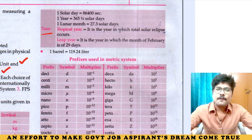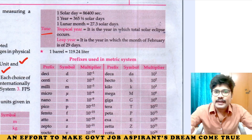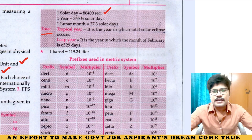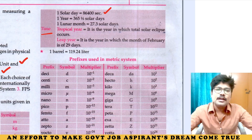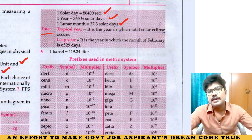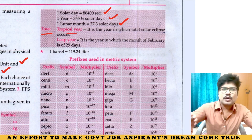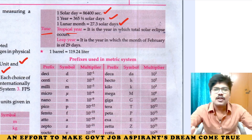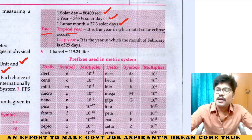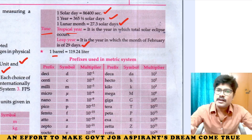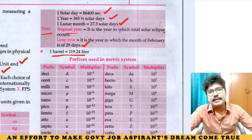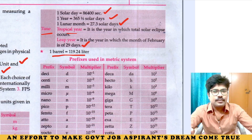Time units: 1 solar day equals 86,400 seconds. 1 year equals 365 and a half solar days. 1 lunar month equals 27.3 solar days. Tropical year — leap year has February with 29 days, that extra day is the leap year — this is important. 1 barrel equals 119.24 liters.